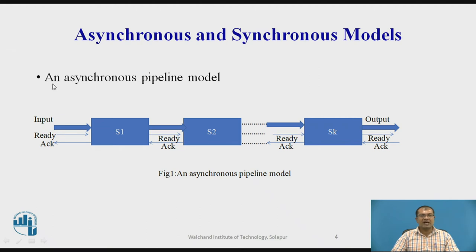The first model which is an asynchronous pipeline model. So in case of asynchronous pipeline model, there are n number of stages. Like stage S1, stage S2, stage S3, S4, up to SK. So total K number of stages are there.